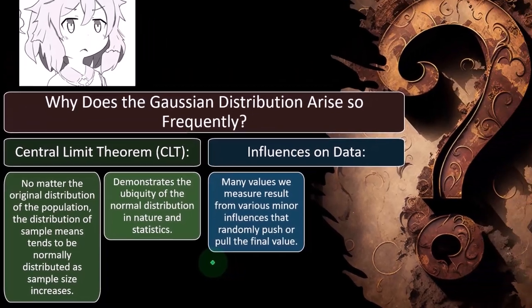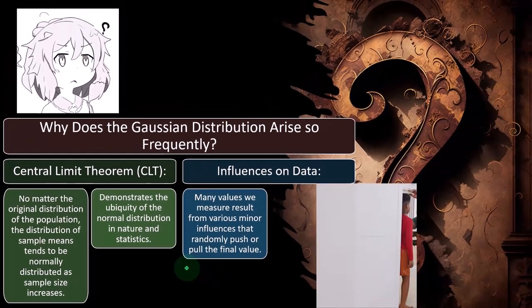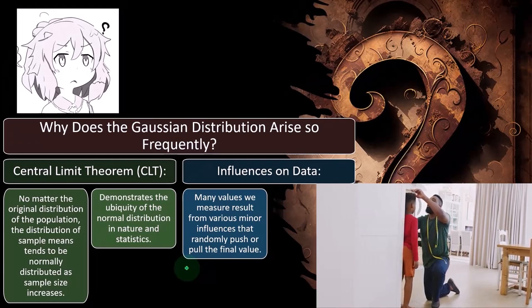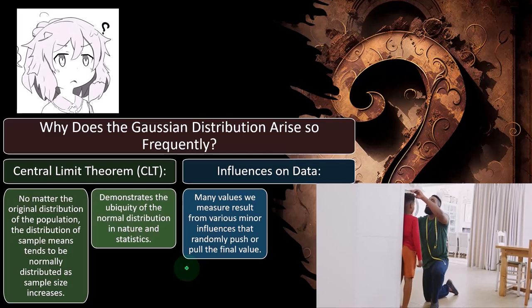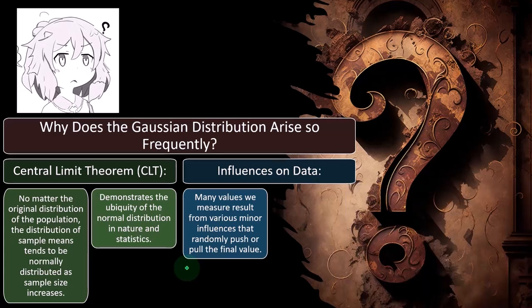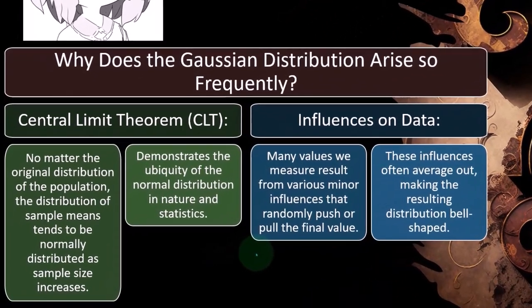Genetics can, of course, nudge the height higher or lower, and then people's diets and whatnot, and their circumstances throughout life could nudge the heights higher or lower around that middle point, which tends towards possibly like a normal distribution.